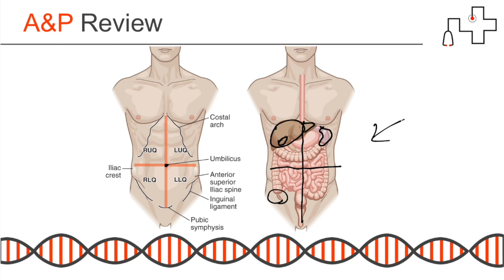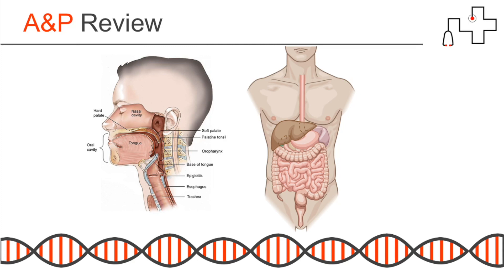Digestion begins in the mouth. The molars will crush and grind food, allowing it to be more easily swallowed — this changes the consistency of the food and prevents aspiration. Enzymes in the saliva then begin to chemically break down complex carbohydrates into simple sugars for easier absorption. So your teeth and saliva are actually aiding in digestion at very early stages.